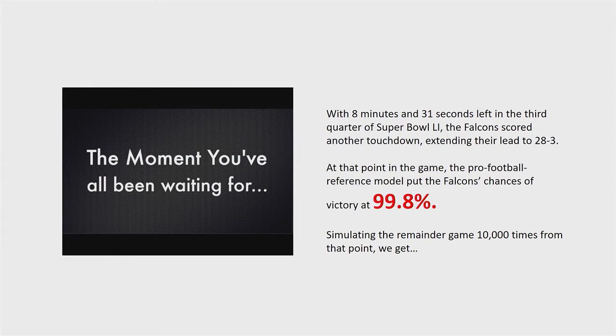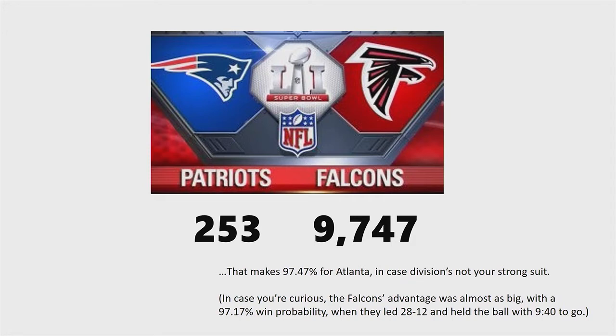With eight minutes and 31 seconds left in the third quarter of Super Bowl 51, the Falcons scored another touchdown to bring them to 28-3. If you go to Pro Football Reference, they had a 99.8% chance to win — 1 in 500. When we simulate the remainder of the game 10,000 times, we get 97.5%. So clearly the Falcons were overwhelmingly favored, but the Patriots were actually live. If a betting market was offering 500-to-1 or 1,000-to-1 at that moment, that's an easy buy — 2.5% is 1 in 40, and 1-in-40 events happen all the time. I was actually quite surprised that it came in as high as it did; largely that's because the simulation, unlike most models, knows that the Patriots are really good on offense and can move down the field quickly.